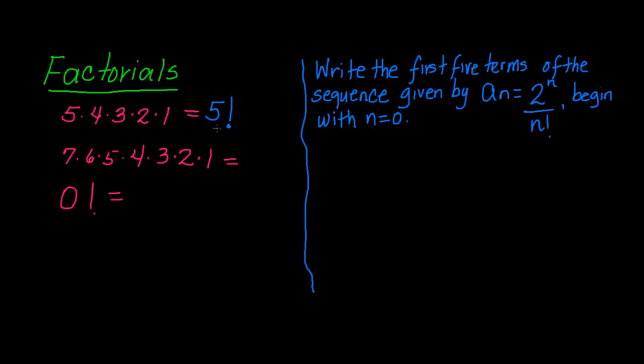Any time you see 5 factorial, it means you're going to multiply 5 times 4 times 3 times 2 times 1, all the way until you get to 1. In this other example, we have 7 times 6 times 5, 4, 3, 2.